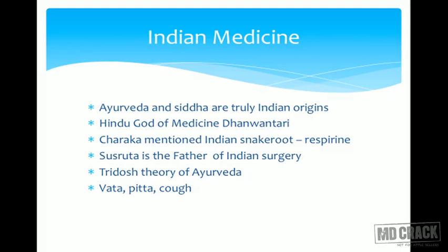Sushruta is the father of Indian surgery. He pioneered many surgical practices in India and was probably the first to start stitching wounds. He used very large ants — he would approximate the incision, make the ants bite on the two ends, then cut off the heads of the ants. The ant went into rigor mortis, and that was how he sutured. Ayurveda deals with the Tridosha theory — Vata, Pitta, and Kapha — where balance between the three gives harmonious health.